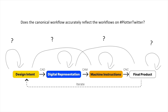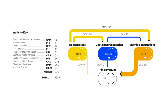To answer these research questions, we returned to the canonical workflow and asked: does this fit when used to conceptualize plotting workflows? We used it as a starting point to look at the things happening on Plotter Twitter, and identified the ways that it fails to capture the activities we observed. We conducted a qualitative study of Plotter Twitter, developed a coding scheme to categorize the workflow steps and activities we were observing, and applied it to tweets we collected over about six months in 2020 using the Twitter streaming API.